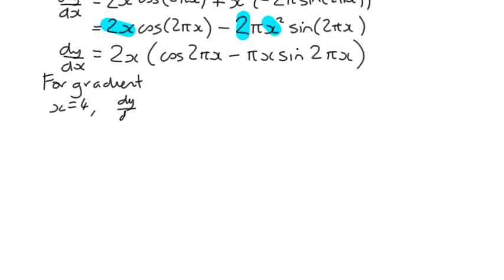So dy/dx. All we need to do is substitute 4 in all along this line. So the first part, 2x becomes 2 times 4 is 8. Our first trig term, 2πx becomes 8π minus 4π multiplied by the sine of 2πx becomes the sine of 8π.